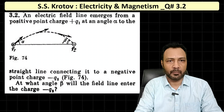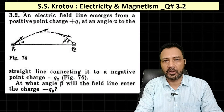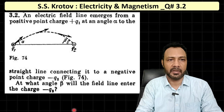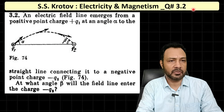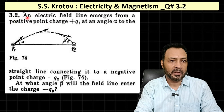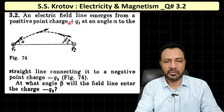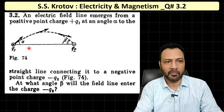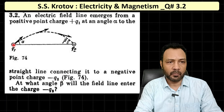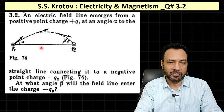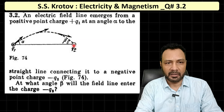Welcome to Quantum Guru. Today I have a question from electrostatics from SS Kota — question number 3.2. The question states: an electric field line emerges from a positive point charge +q1 at an angle alpha to the straight line connecting to a negative point charge -q2. We know that the electric field line emerges from a positive charge and enters at the negative charge.